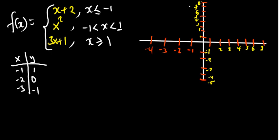The point negative 1 comma 1 is a closed circle because negative 1 is included (less than or equal to). We connect the points with an arrow going left to show the line continues. Since negative 1 is included, we put a closed dot at that endpoint and draw the line from there extending to the left.